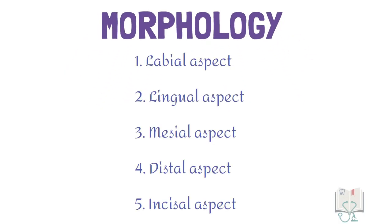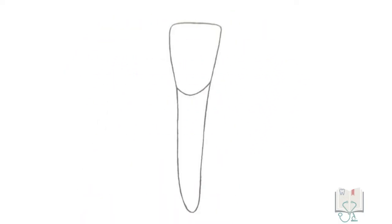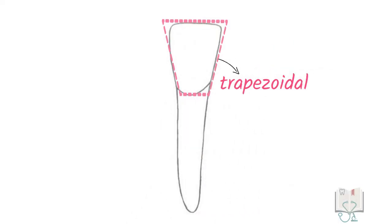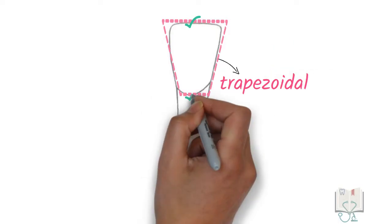The morphology of the tooth is studied under five aspects. Let us start with the labial aspect. The outline form of the crown is trapezoidal with its longer side towards the incisal ridge and shorter side towards the cervical line.